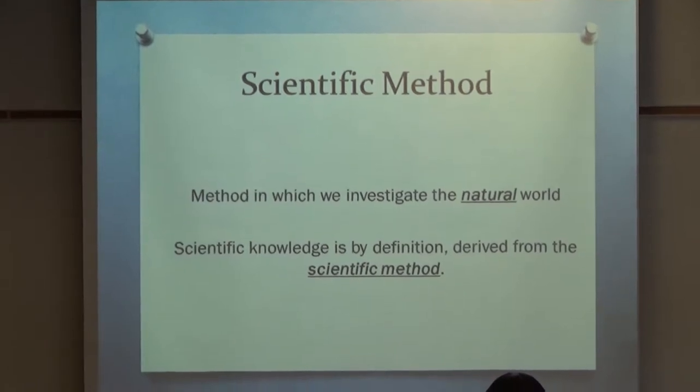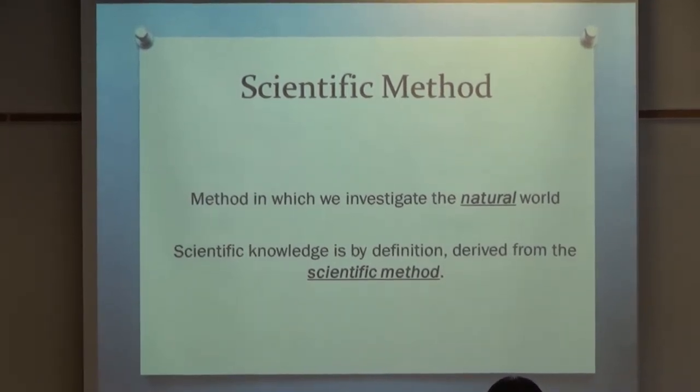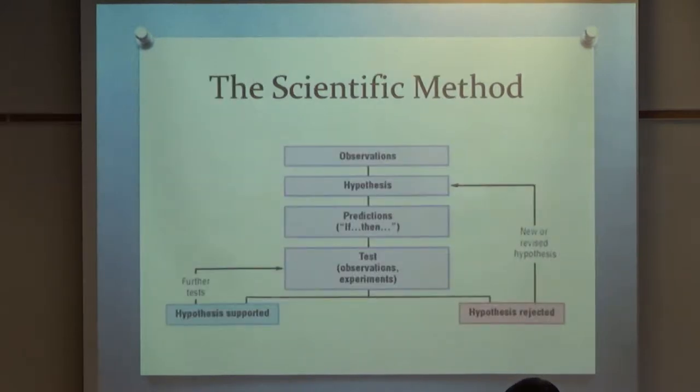So we do this using the scientific method, and we can use this to investigate the natural world. So observable effects, observable phenomenon. We can use science to work these things out and find out how they work. And scientific knowledge, by definition, is derived from that method. So using the scientific method, we garner information about the world around us, and we call that scientific knowledge.